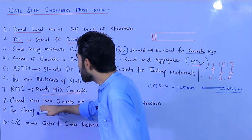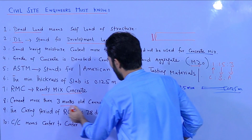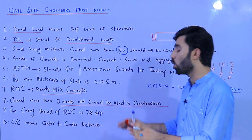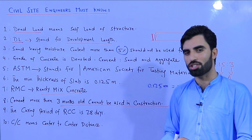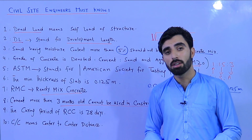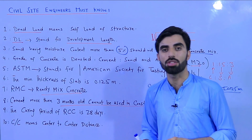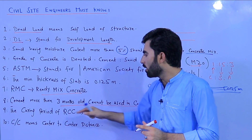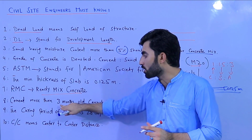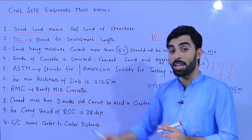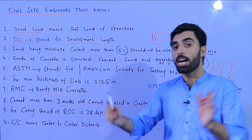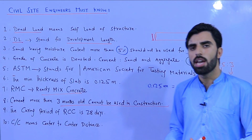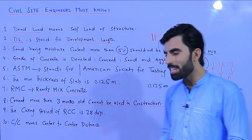The eighth point: cement that is more than three months old cannot be used in building construction. If you use expired cement, you will not get the full strength of the concrete. The maximum usable age of cement is three months, or 90 days. Within 90 days you must use the cement; otherwise it becomes expired and should not be used.